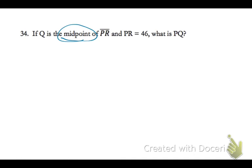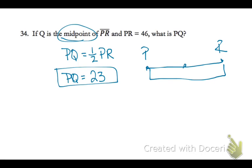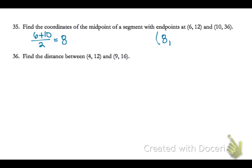If Q is the midpoint of PR, and PR equals 46, then PQ is halfway across. The whole thing is 46, with P on one end and R on the other, so Q is in the middle. The whole thing is 46, so you divide by 2 to get an equal segment. To find coordinates, remember you find the average of the X's and then the average of the Y's, and that becomes your midpoint.